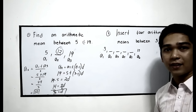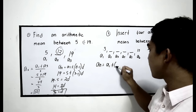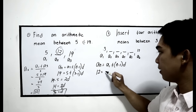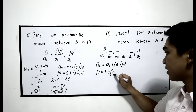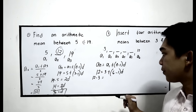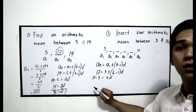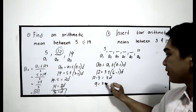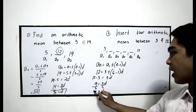Find the common difference. An is equal to a1 plus n minus 1 times d. An is 12, a1 is 3, n is 6, so: 12 minus 3 is equal to 6 minus 1 times d, which is 5d. 12 minus 3 is 9, equals 5d. Dividing by 5, d is 9 over 5.